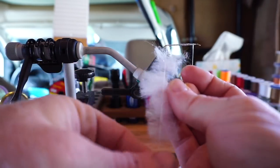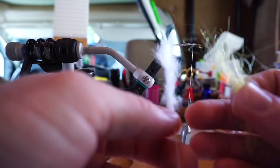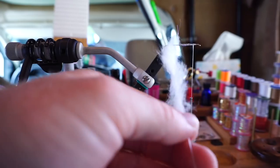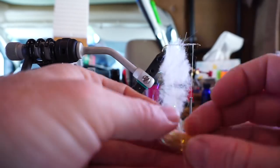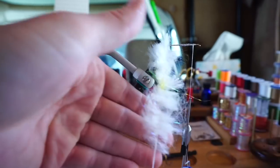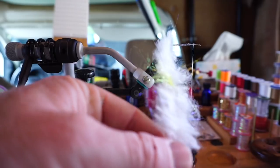Carefully place the first piece of streamer dubbing in your loop, and try to arrange it evenly. Place the hotspot in as well, which can be tricky. Then place the second piece of streamer dubbing in your loop, and try to make it even as well. Once everything is adjusted properly, then give your twister a spin and create a dubbing hackle.